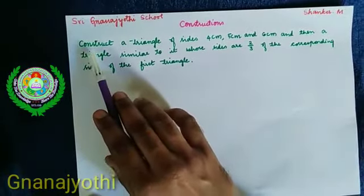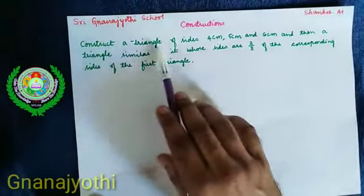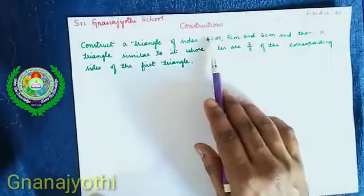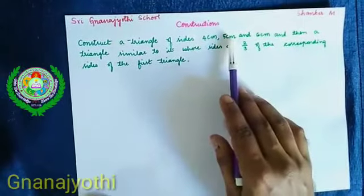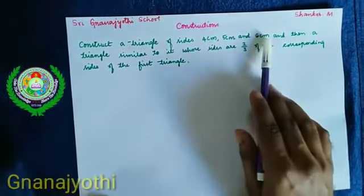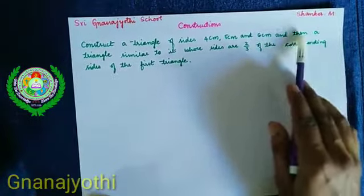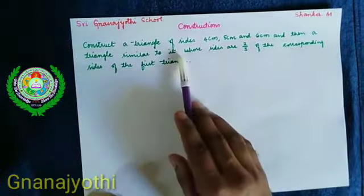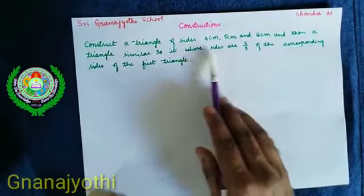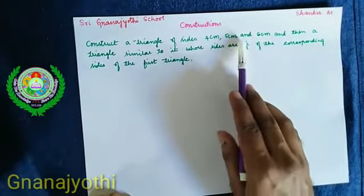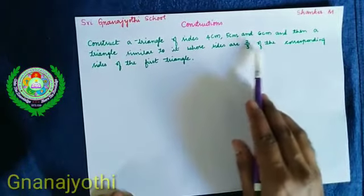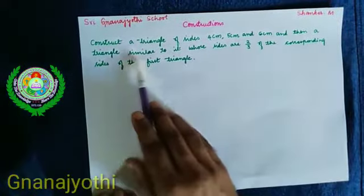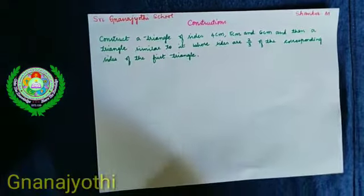The first question is: construct a triangle of sides 4 cm, 5 cm and 6 cm, and then a triangle similar to it whose sides are 2/3 of the corresponding sides of the first triangle.